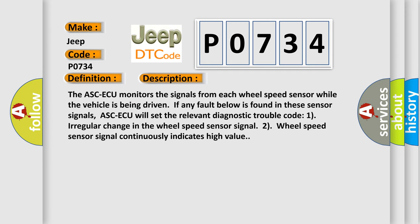The ASC-ECU monitors the signals from each wheel speed sensor while the vehicle is being driven. If any fault below is found in these sensor signals, ASC-ECU will set the relevant diagnostic trouble code: 1) Irregular change in the wheel speed sensor signal, 2) Wheel speed sensor signal continuously indicates high value.